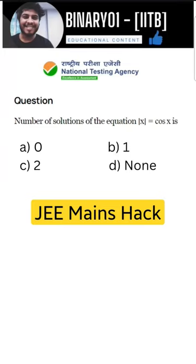Here is a question of JEE Mains, which is the number of solutions of the equation |x| equals to cos x. So, there are 4 options given here: 0, 1, 2, and none.